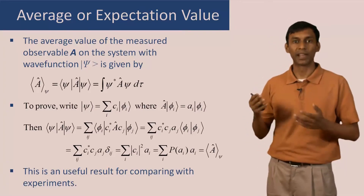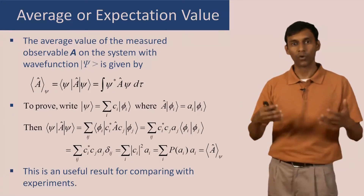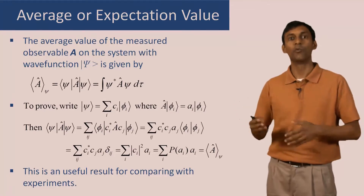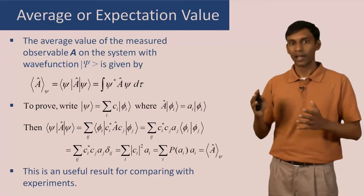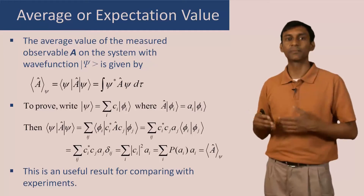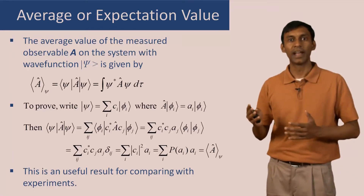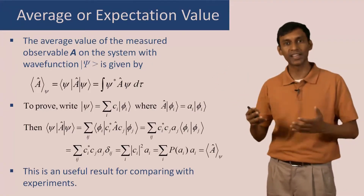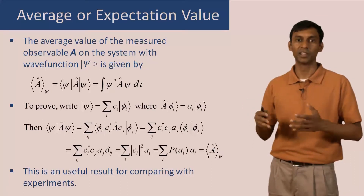This is a very useful result for comparing with experiments: when you do an experiment in the lab, the quantity you obtain is typically compared with the average value from the quantum chemical calculation. Note that this average value, psi|A|psi, is sometimes called the expectation value. Be careful with this nomenclature — even though it is called the expectation value, it is not what you will expect on a single measurement, because the values you actually get are eigenvalues of A, not this average.